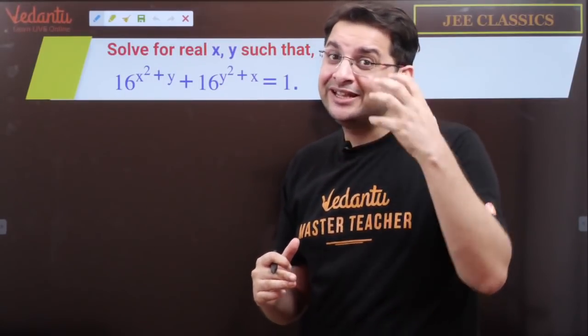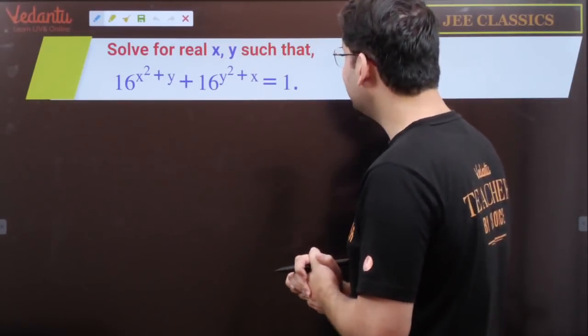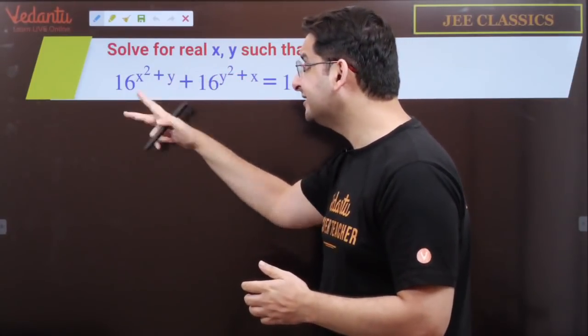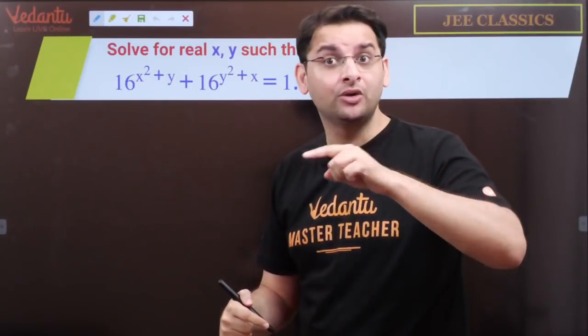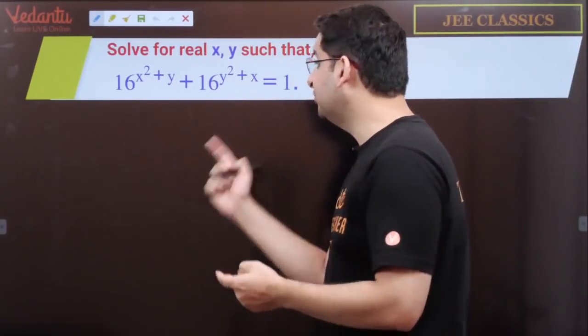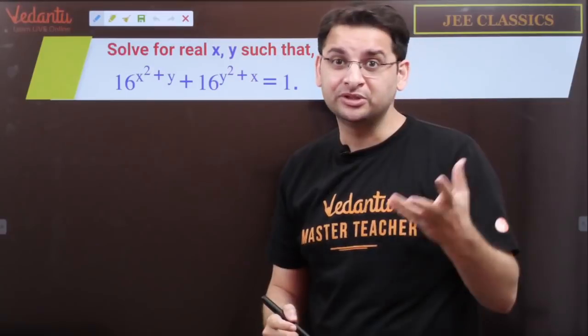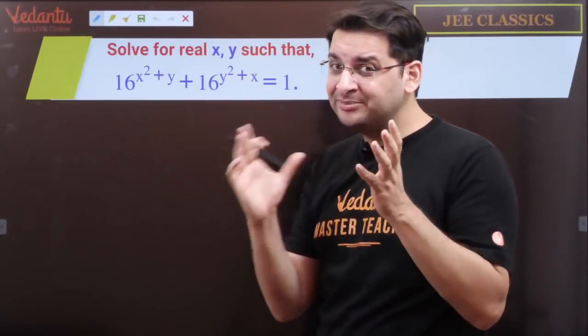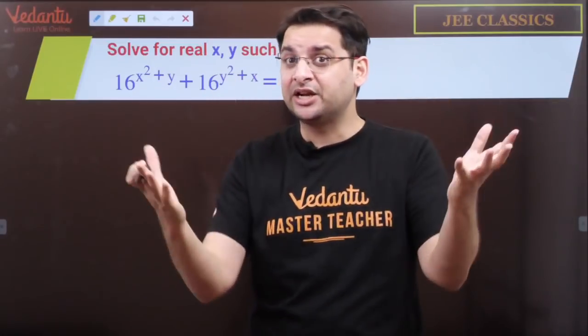So how to think about such questions? Now one of the things we can apply here is the fact that 16^(x²+y) will always be positive, likewise 16^(y²+x) will always be positive. So we can apply AM-GM here because the only condition required is the numbers should be positive.